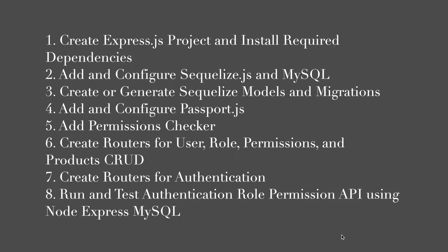Step 4: Add and configure Passport.js. Step 5: Add permissions checker. Step 6: Create routers for user, role, permissions, and products CRUD — create, read, update, and delete. Step 7: Create routers for authentication or login. Step 8: Run and test authentication role permissions using Node.js, Express, and MySQL.